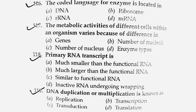Next question: The metabolic activities of different cells within an organism vary because of the difference in what? The options relate to number of nucleic acids, number of nucleotides, or enzyme types. Metabolic activities are regulated by hormones and enzymes, which vary from organism to organism. The correct answer is option number B — enzyme types.